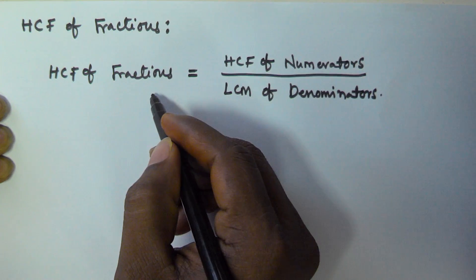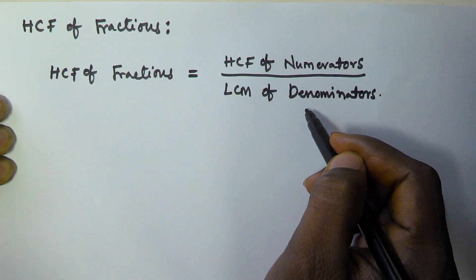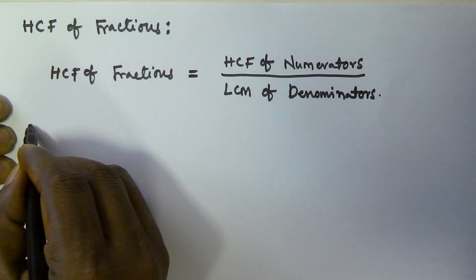So the HCF of fractions is given by HCF of numerator by LCM of denominator. Now let us see one example.